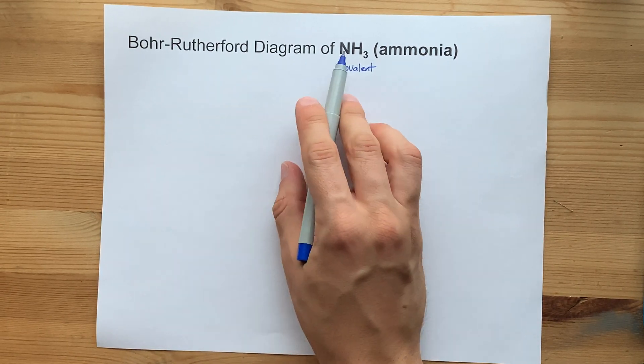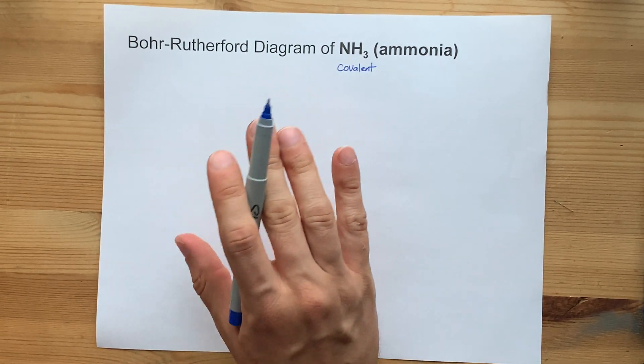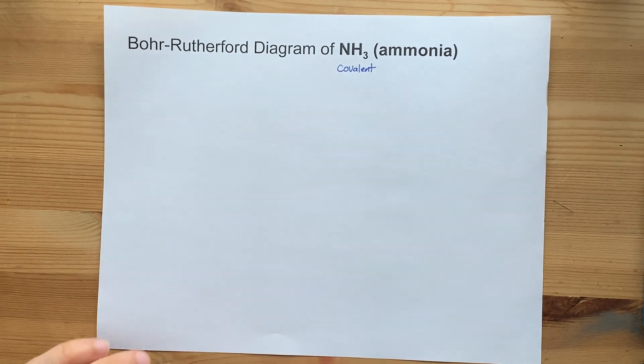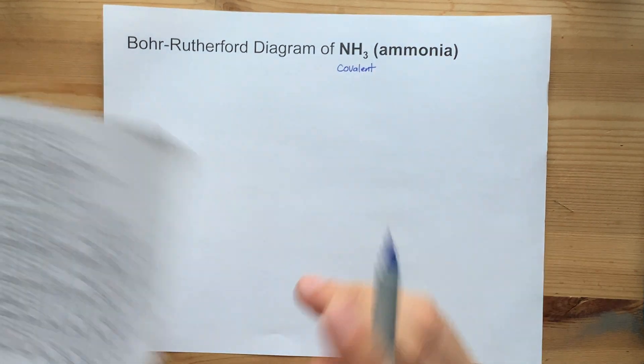To draw the Bohr-Rutherford diagram of the compound, we first need to draw the diagram for each of the atoms individually. Let's start with nitrogen.